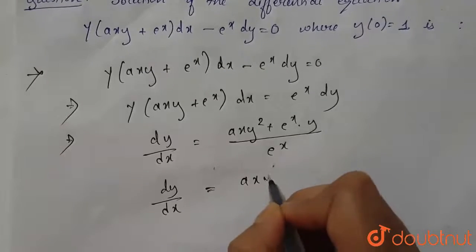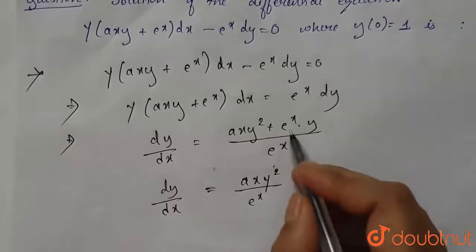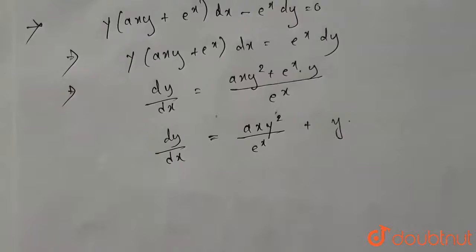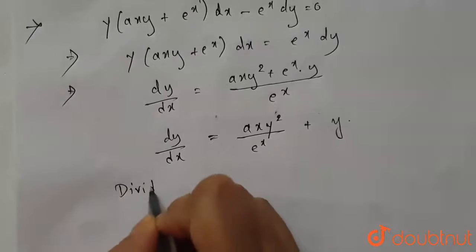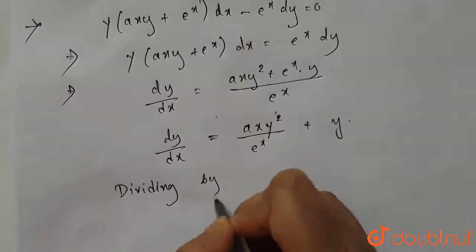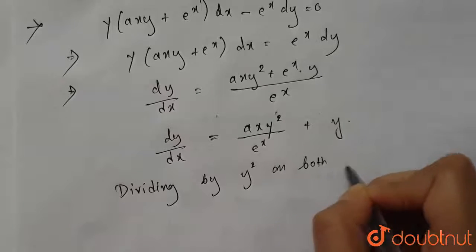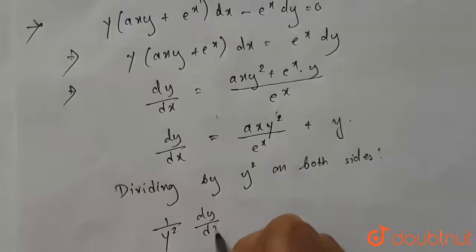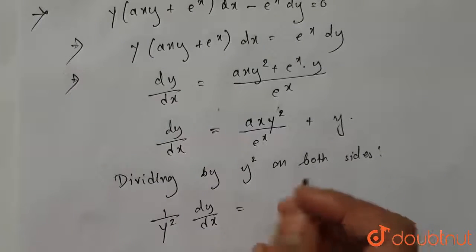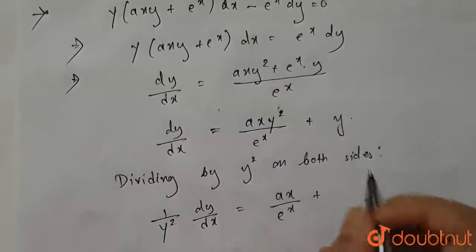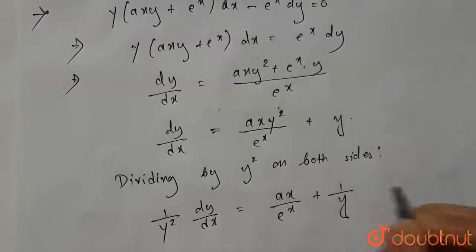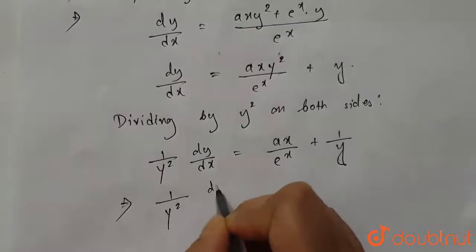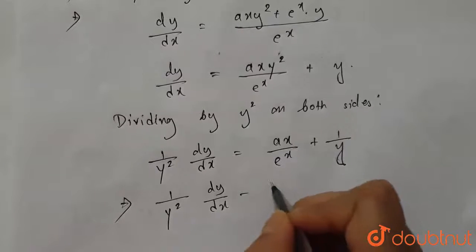So dy/dx = ax·y²·e^(−x) + y. Now let's divide both sides by y². Dividing by y² on both sides, we get (1/y²)·dy/dx = ax·e^(−x) + 1/y. Rearranging: (1/y²)·dy/dx − 1/y = ax·e^(−x).